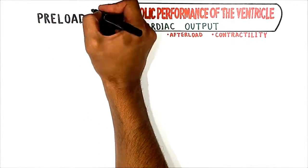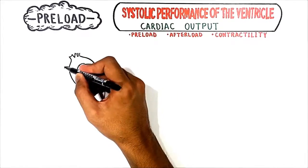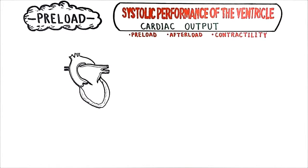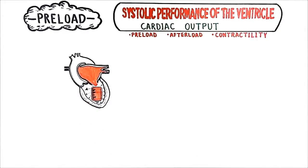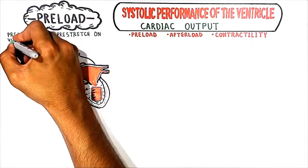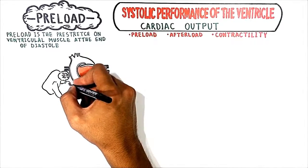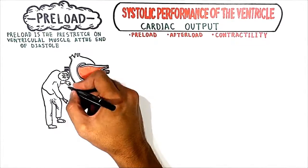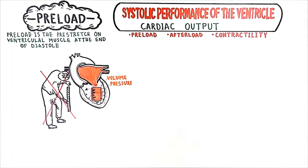First, let's talk about the preload and see how it affects the systolic performance of the left ventricle. It is very important to know that during diastole, when the ventricular muscle is in a relaxed state, blood starts filling it and pre-stretches the ventricular muscle. The preload is actually this pre-stretch on the ventricular muscle at the end of diastole. Since we cannot practically measure the pre-stretch directly, in clinical practice we measure the factor that caused it — the volume of blood and pressure in the ventricle during diastole.